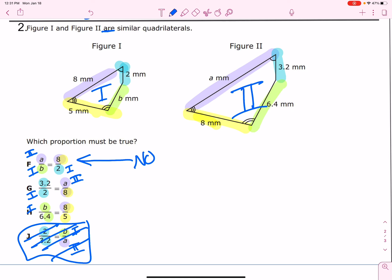G is possible and H is possible. Let's look at why it may or may not be. 3.2 is on Figure 2. And 8 is on Figure 1. That could work. And then 6.4 is on Figure 2. 8 is on Figure 1. 5 is on Figure 1.